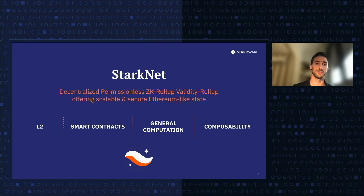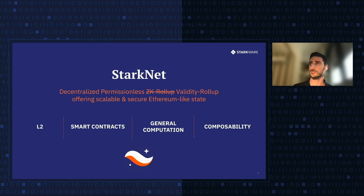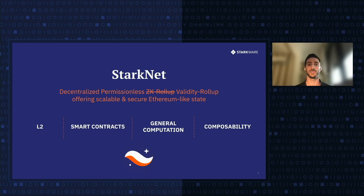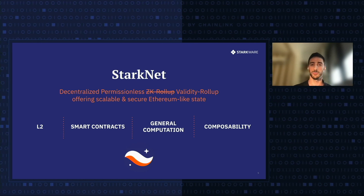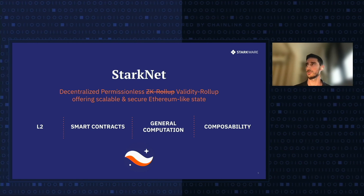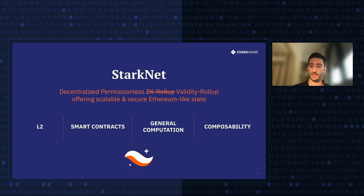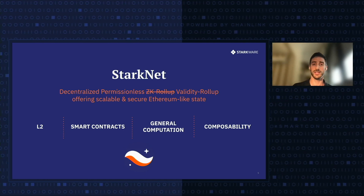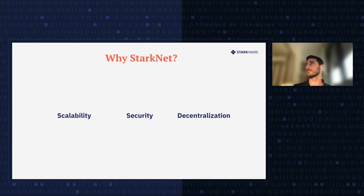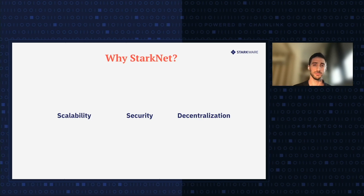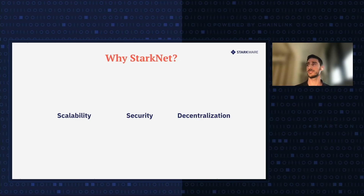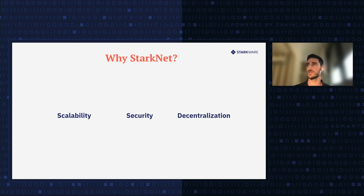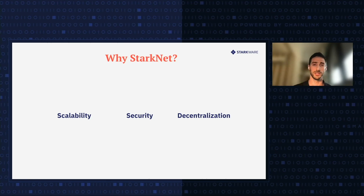What does it actually mean? It means it's an L2 on top of Ethereum. Developers are able to write smart contracts, deploy them on the system. Those contracts support general computation and can also interact with each other relying on composability. That's StarkNet in one sentence. Why StarkNet? The beauty of StarkNet is that it allows us to offer scalability while still preserving the same security as L1 and the same decentralization. I want to explain why that is, and through that explain what we saw with the dYdX and Chainlink example.